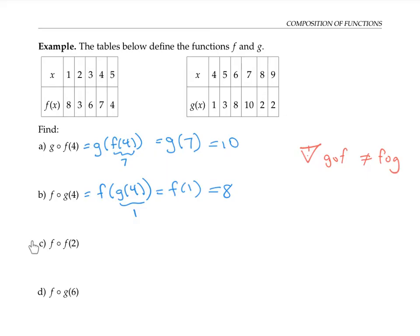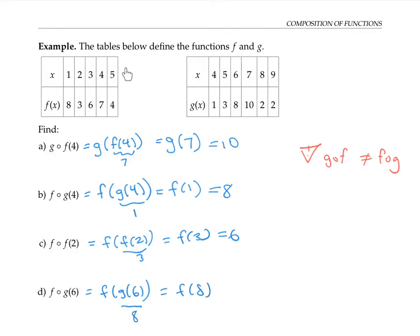Please pause the video and take a moment to compute the next two examples. We can replace f composed with f of two by the equivalent expression f of f of two. Working from the inside out, f of two is three, and f of three is six. If we want to find f composed with g of six, we write that as f of g of six. Using the table for g, g of six is eight. But f of eight — eight is not in the table as an x value for the f function, so f of eight does not exist. We can say that six is not in the domain for f composed with g.